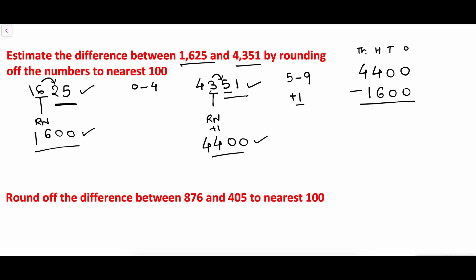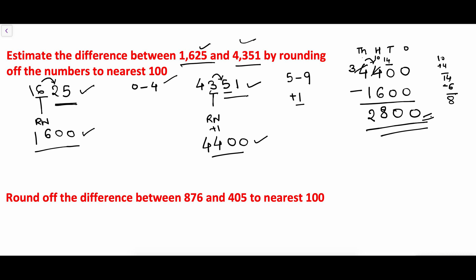For 4400 minus 1600: in the hundreds place, 4 minus 6 is not possible, so we borrow from the thousands place. The thousands digit 4 gives 1 thousand (10 hundreds), becoming 3, and hundreds becomes 10 plus 4 equals 14. So 14 minus 6 is 8. In the thousands place, 3 minus 1 is 2. The final answer is 2800. We rounded both numbers to the nearest 100 first, then found the difference.